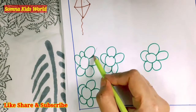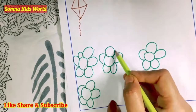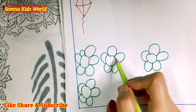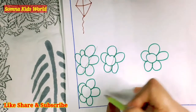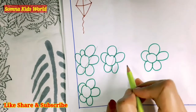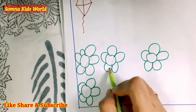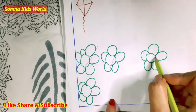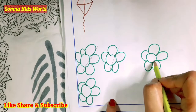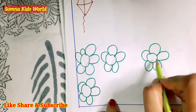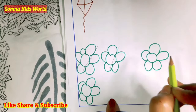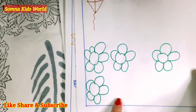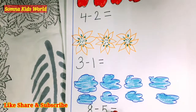We are having three flowers. If I remove two flowers and take two flowers away, how many flowers are left? One — so you can see it is having only one flower.